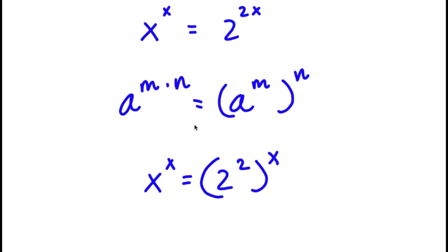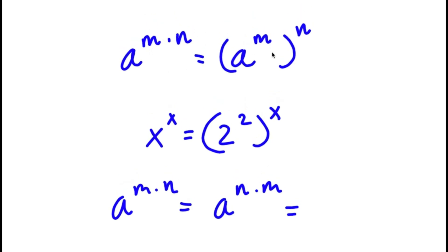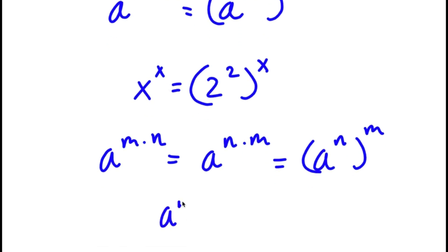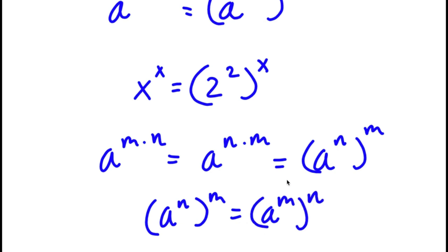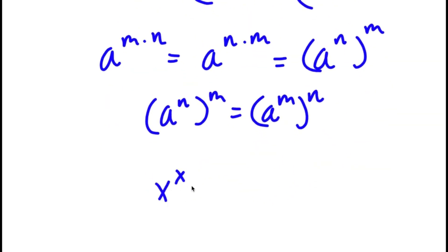Now, a to the power of m times n is also equal to a to the power of n times m — we can switch the order. So if a to the power of m times n equals a to the power of m to the power of n, then a to the power of n to the power of m is equal to a to the power of n to the power of m as well. This means 2 to the power of 2 to the power of x is the same thing as 2 to the power of x to the power of 2. So now I have x to the power of x equals 2 to the power of x to the power of 2.